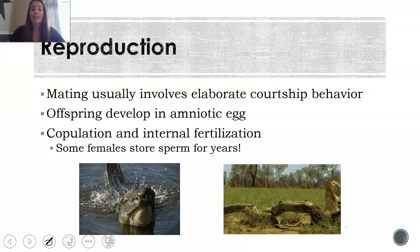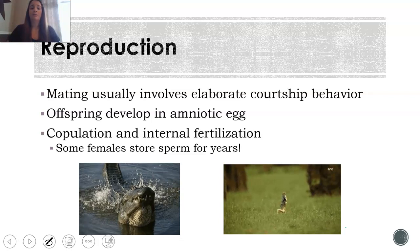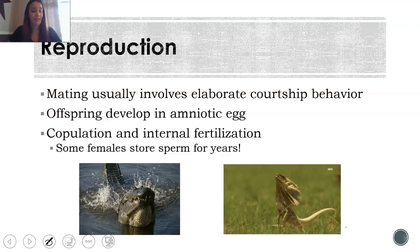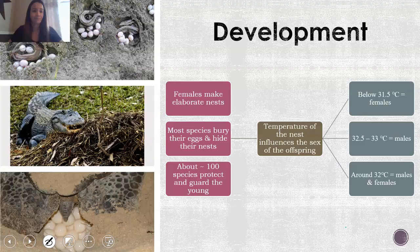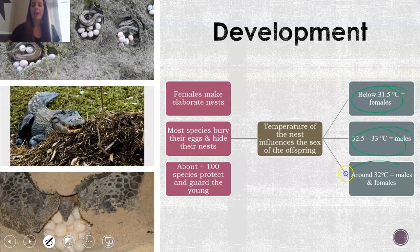In terms of reproduction, mating is usually quite an elaborate courtship behavior, as you see in these two images of males trying to impress females. The offspring then develop in that amniotic egg we talked about — so important to being successful on land — and they do have internal fertilization. Females usually make very elaborate nests; the species will bury their eggs and hide their nests. Only about 100 species actually stay around to protect and guard their young — most of the time they just hide the nest and abandon it. The temperature of the nest, though, influences what sex the offspring are.